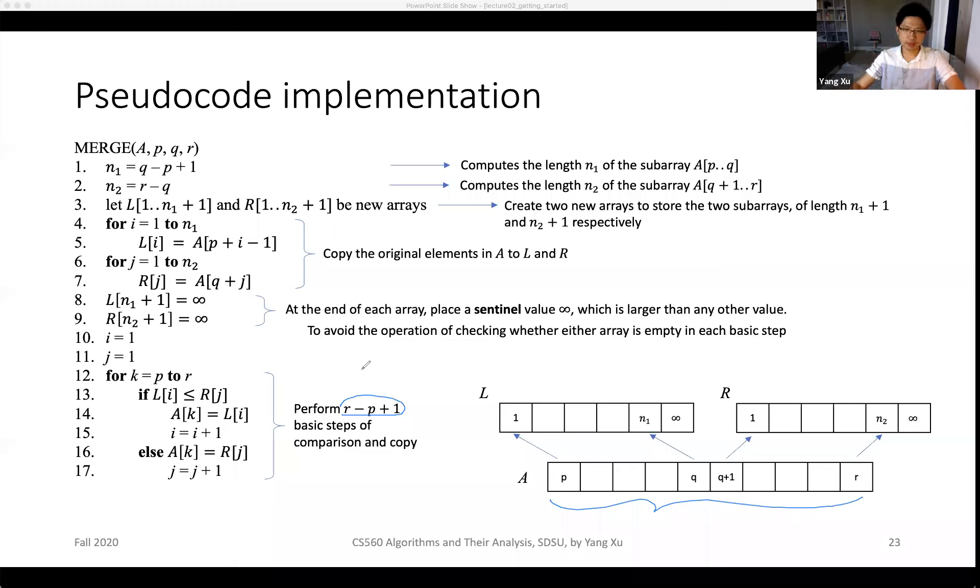The elements from L and R are like two piles of cards. We take out the top two elements from the two arrays and make a comparison. If the left pile element has a smaller value, if the element in the L pile is smaller, then we will copy its value to the current position.